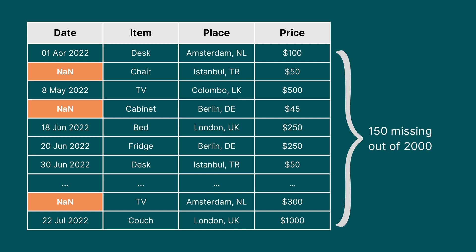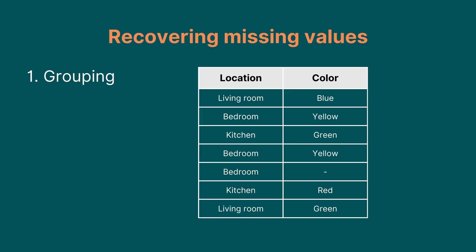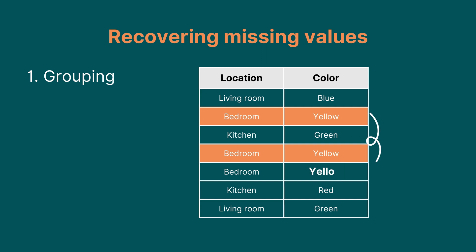If a column has a lot of missing values but is also an important column in your model, you should try to recover as much information as possible. Here are some approaches. Assigning the most occurring value in the place of the missing values. You can be smarter and do this based on groups of data points — for example, if the color corresponding to the value 'bedroom' is most commonly yellow, you can fill in yellow for missing values and green for others.